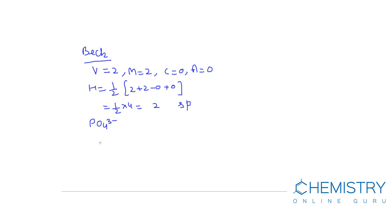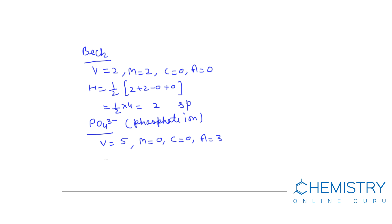Another example is PO₄³⁻, the phosphate ion. Phosphorus has 5 valence electrons, so V equals 5. Oxygen is bivalent, so M equals 0. C equals 0. A equals 3 because 3 negative charges are present on the phosphate ion. H equals one-half times (5 plus 0 minus 0 plus 3) equals one-half of 8, which equals 4. When H equals 4, hybridization is sp3.